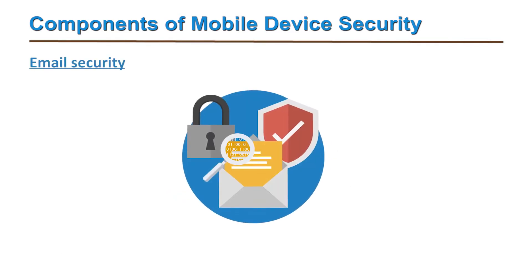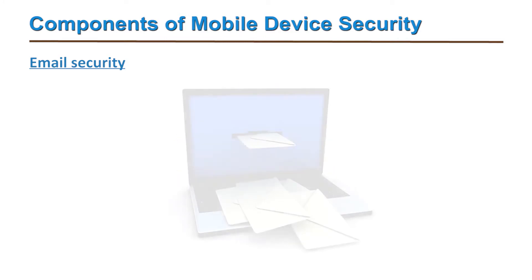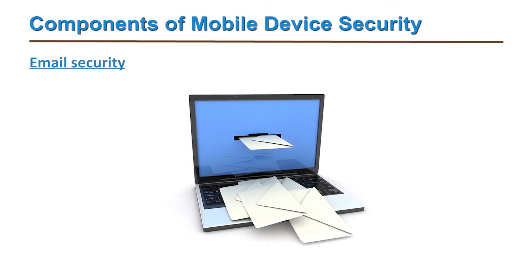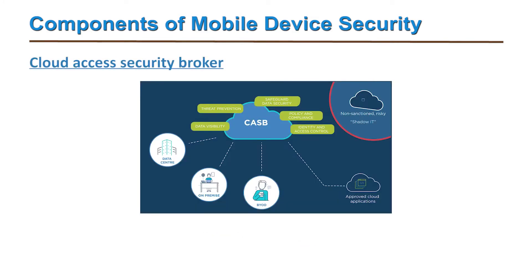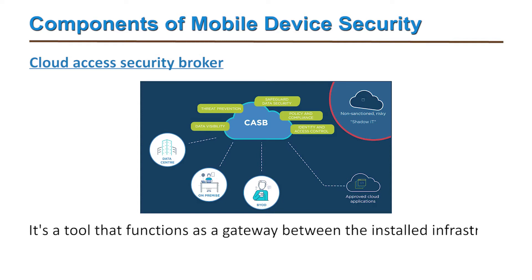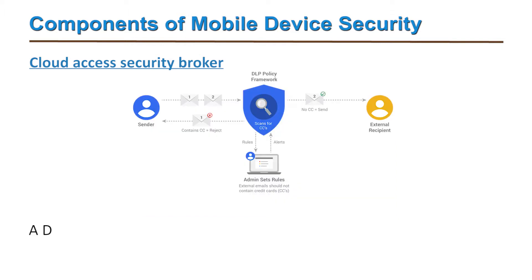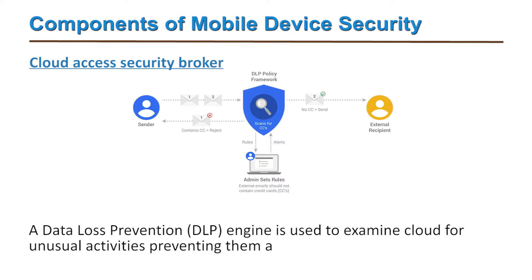The fourth component is email security, which we discussed elaborately in a previous module. Major organizations communicate to users and employees only via email, so this is very important. Finally, the fifth is the cloud access security broker, or CASB. It is a tool that functions as a gateway between the installed infrastructure and various cloud applications like Dropbox. A data loss prevention (DLP) engine is used to examine the cloud for unusual activities.